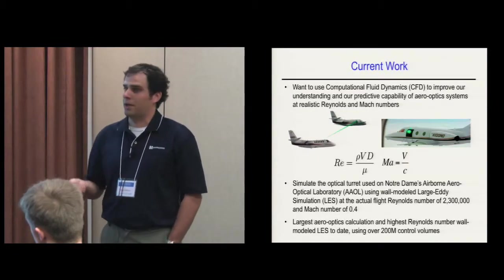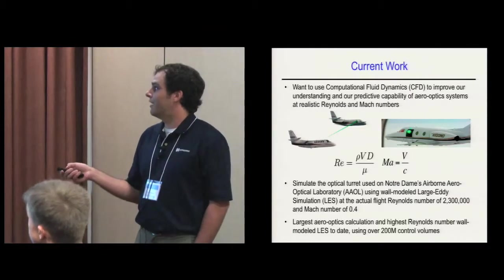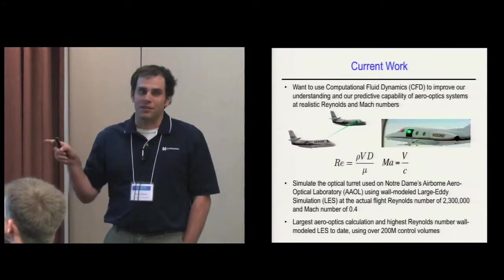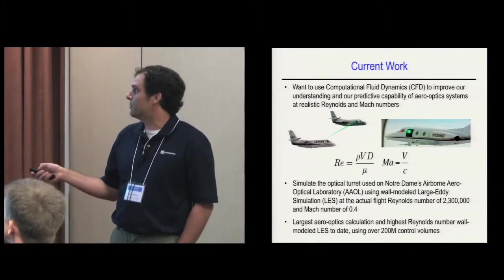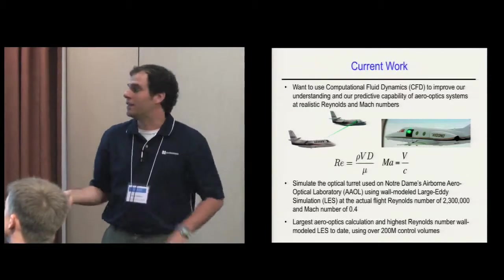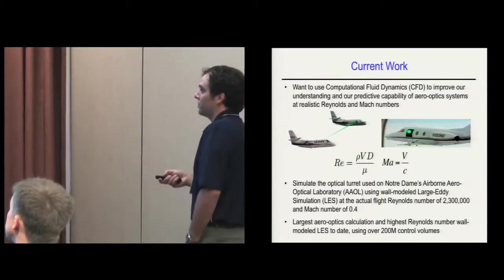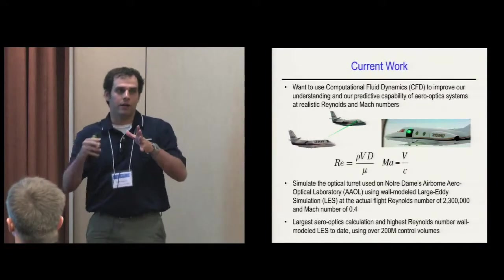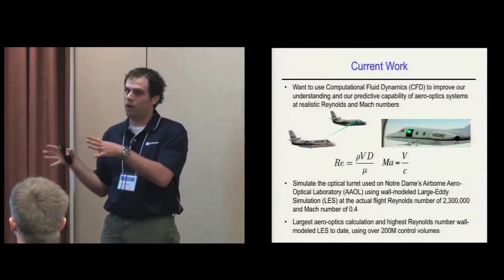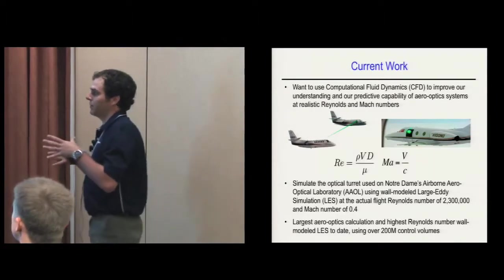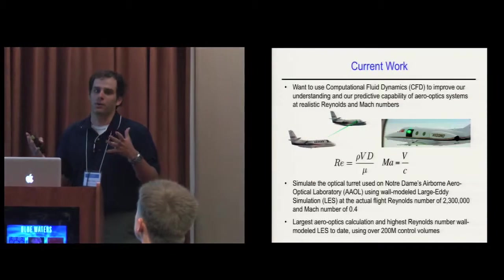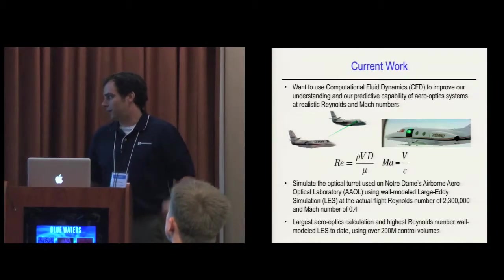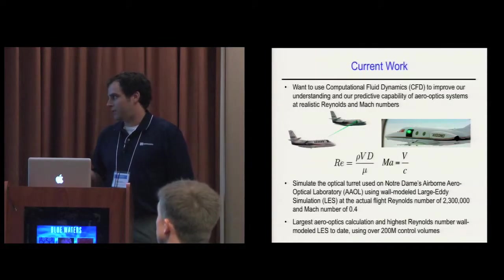There's a large amount of data on aero-optics from the aero-optical laboratory at Notre Dame, where there's two planes that fly around Michigan. One is a source plane that shoots a laser at the other one, which has a turret mounted to it - a hemisphere with a cylinder on top. Then they measure the aero-optical distortion of that laser and develop mitigation techniques.